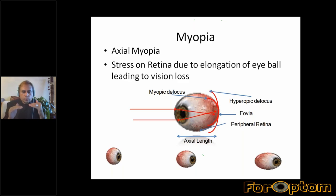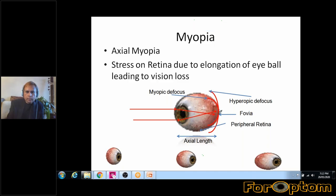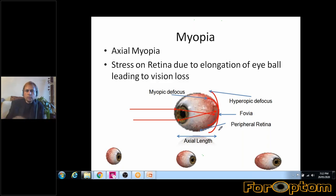Two more terms you should now understand and learn are myopic defocus and hyperopic defocus. Myopia is focusing in front of the retina, so you need some kind of optical device to get that focus onto the fovea. Axial length is a measurement to understand whether the eyeball is deformed or causing any stress on the retina. You need to measure axial length. This is the peripheral retina.